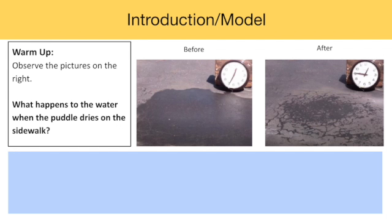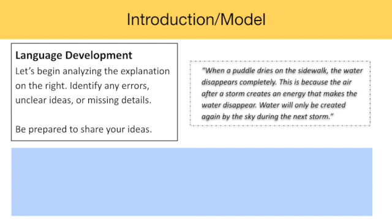What happens to the water when the puddle dries on the sidewalk? The explanation given is, when a puddle dries on the sidewalk, the water disappears completely. This is because the air after a storm creates an energy that makes the water disappear. Water will only be created again by the sky during the next storm.